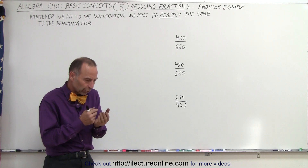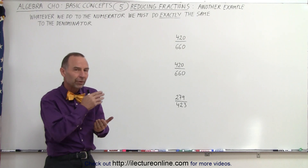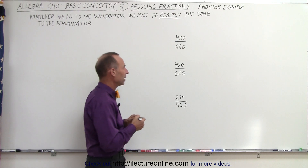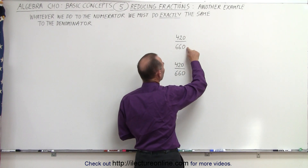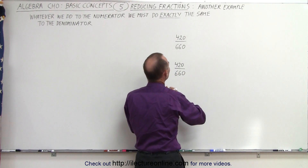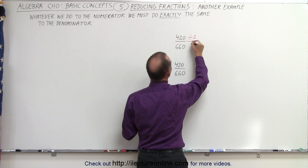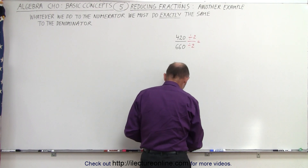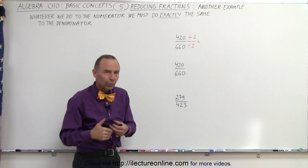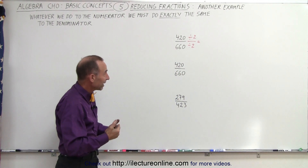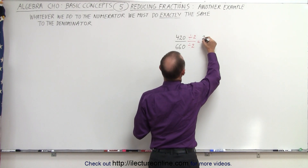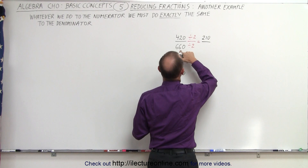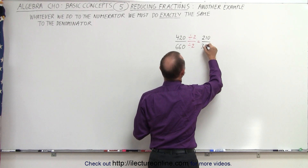First, we're going to employ the method where we start with the smallest prime number and work our way down the list of prime numbers. We realize that both numbers are even — the numerator and denominator are even — so we can divide both by 2. Using small numbers like 2 makes it easier to reduce. So 420 divided by 2 is 210, and 660 divided by 2 is 330.